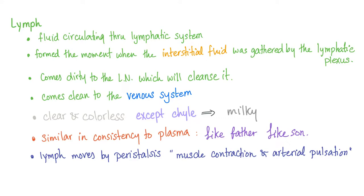Lymph is clear. Lymph is colorless except for chyle, which is milky. I've told you about chyle in my previous video on the lymphatic system, so don't forget to watch it — I'll leave the link down below. It's similar in consistency to plasma. Like father, like son — lymph comes from the plasma because it was in the capillaries, then lost in the interstitium, then the lymphatics picked up that fluid.